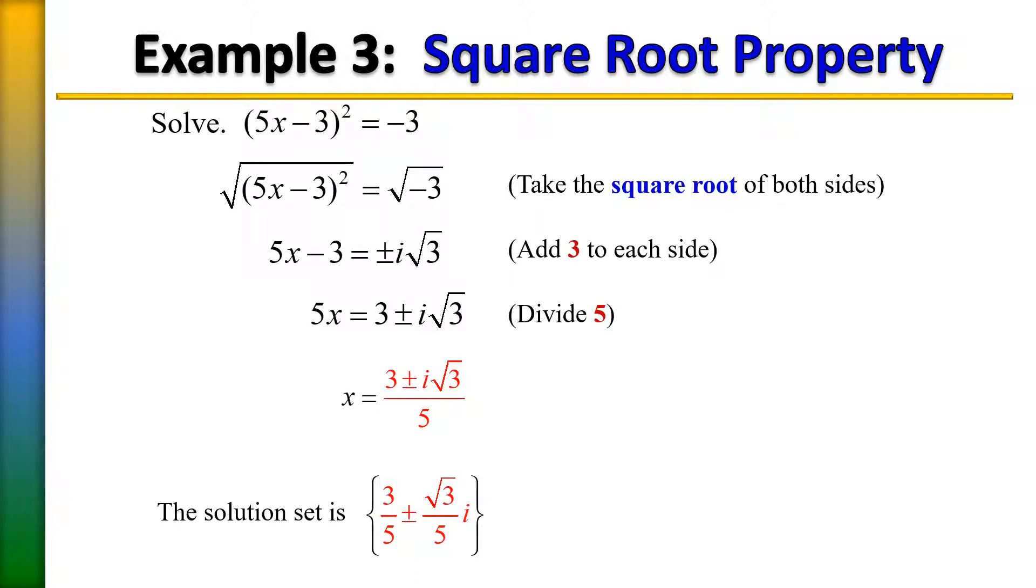Another way to write your solution. Note that on top in the numerator you have two terms: you have 3 here and over here you have i radical 3.